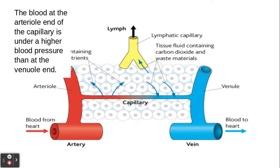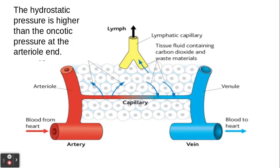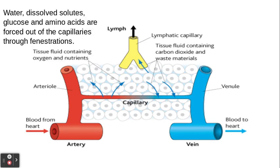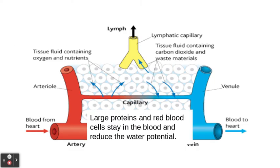The key things here come directly from the mark scheme: water, dissolved solutes, glucose, and amino acids are forced out of the capillary through fenestrations. Fenestrations are the small gaps within the capillary wall. You cannot say 'holes' — you get zero marks for saying holes. Our blood vessels do not have holes in them; they have fenestrations or gaps.